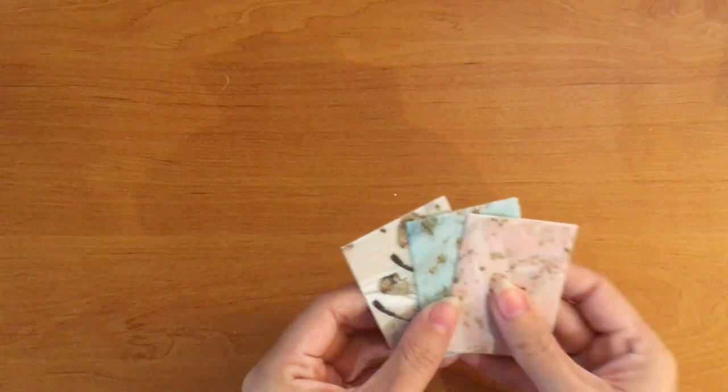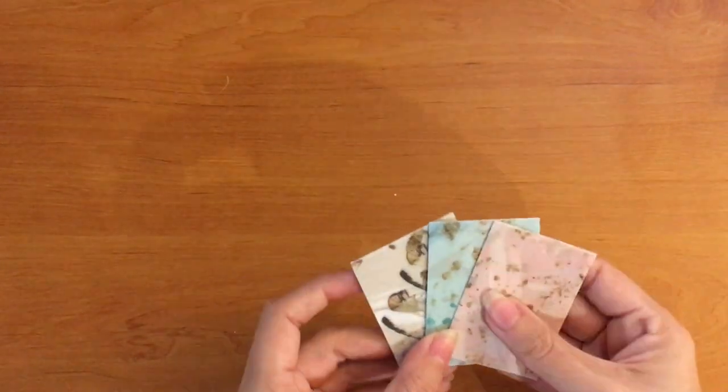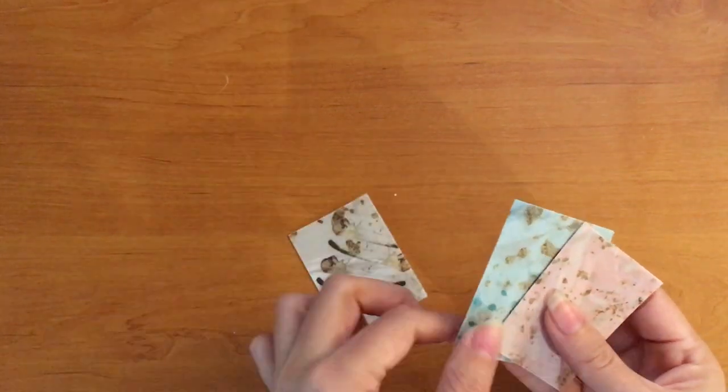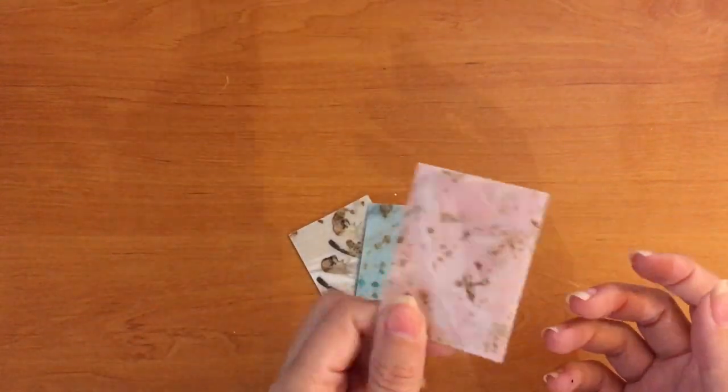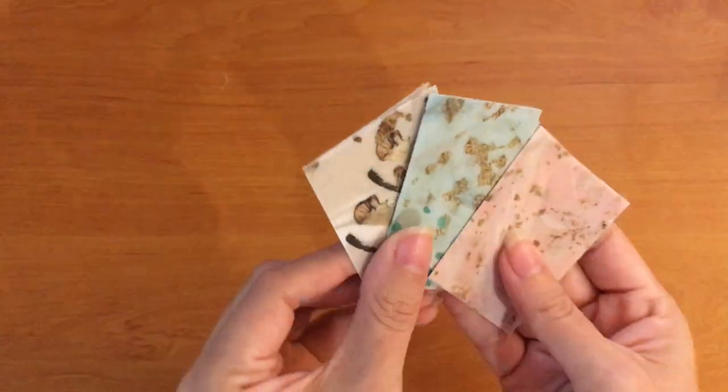Then we have feathers, hidden in there. There are feathers, but they're not really obvious. So we've got three beige, three green, and three pinks, with some like gold splashes. Very cute. I really like those.